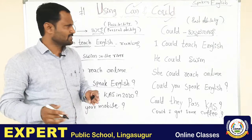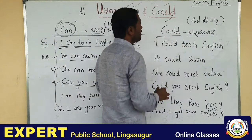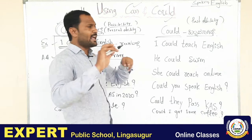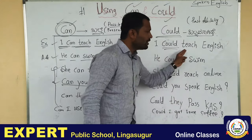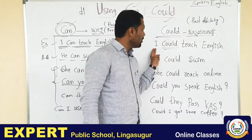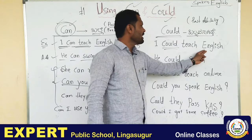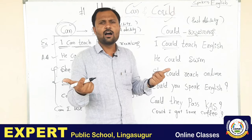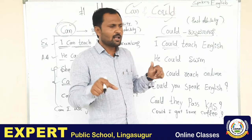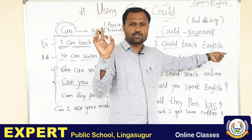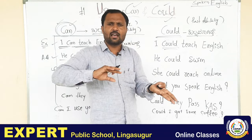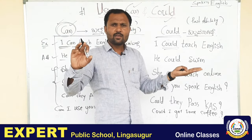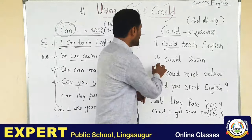Now let's look at 'could.' For example: I can teach English — but in the past form it becomes: I could teach English. 'I could teach English' means I was able to teach English before, but now maybe I cannot. I could teach English in 2000 — meaning at that time I had the ability. I could teach math — I was able to teach math. He could swim in the river.